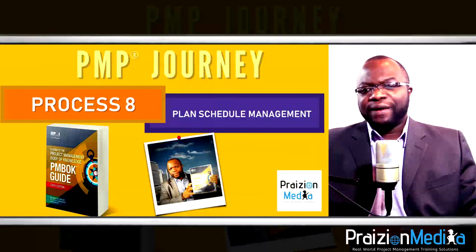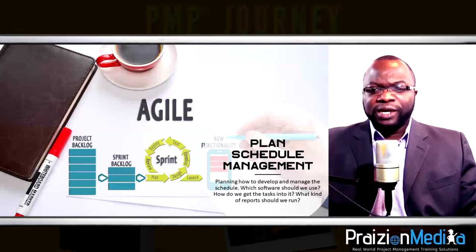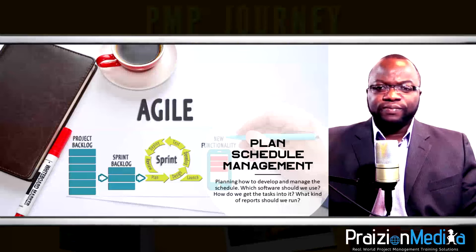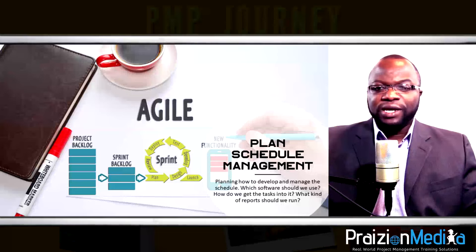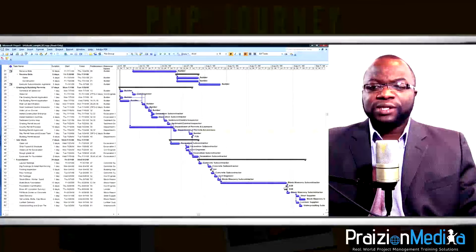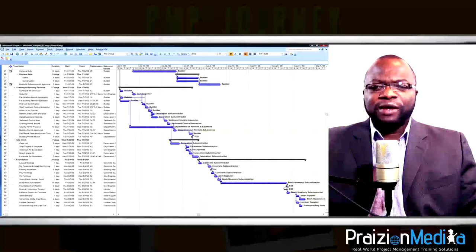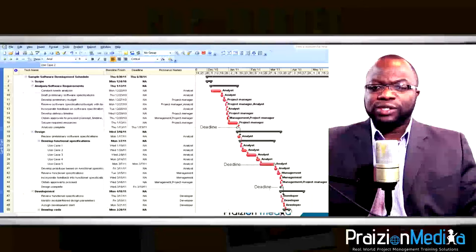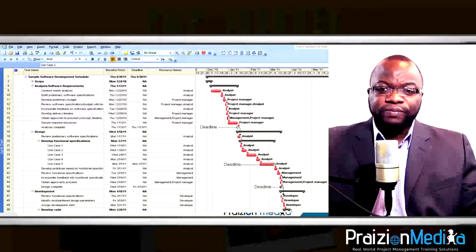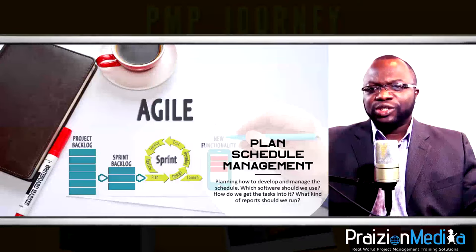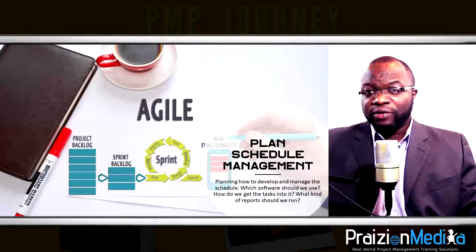Process 8: Plan schedule management. This is where we put together a plan for how to manage the schedule — how to define activities, sequence them, estimate durations, and put the whole schedule together. In the world of PMI, we need to be intentional about the how: will activities be defined with team effort, which relationships will we use, which tolerances do we need to be aware of?